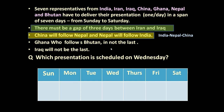The next statement: Ghana who follows Bhutan means Ghana is after Bhutan, but Ghana is not the last. Now, seven positions are there. If you see, five are affected by the first statement — these five may be the first five, or they may be the last five. That is the only two options.